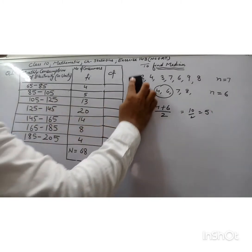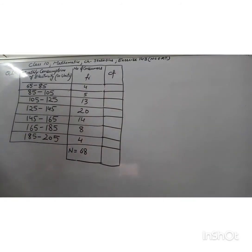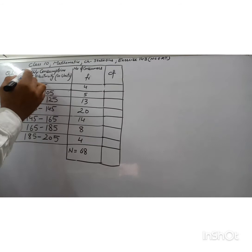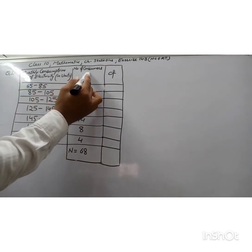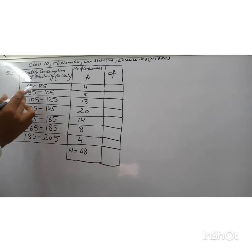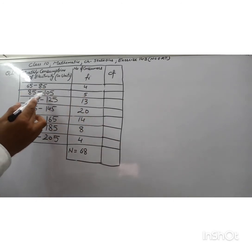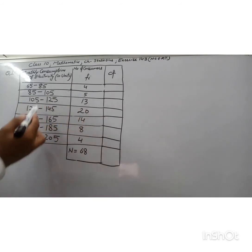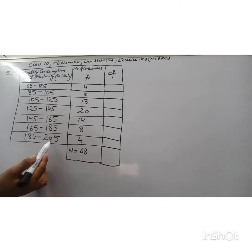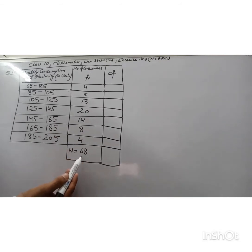This was for ungrouped frequency distribution. For grouped frequency distribution we have another method to find the median. Let's take one example: monthly consumption of electricity in units and the number of consumers. From 65 to 85 units there are 4 consumers, 85 to 105 units there are 5 consumers, and so on up to 185 to 205 units with 4 consumers. Total number of consumers is 68, so n = 68.